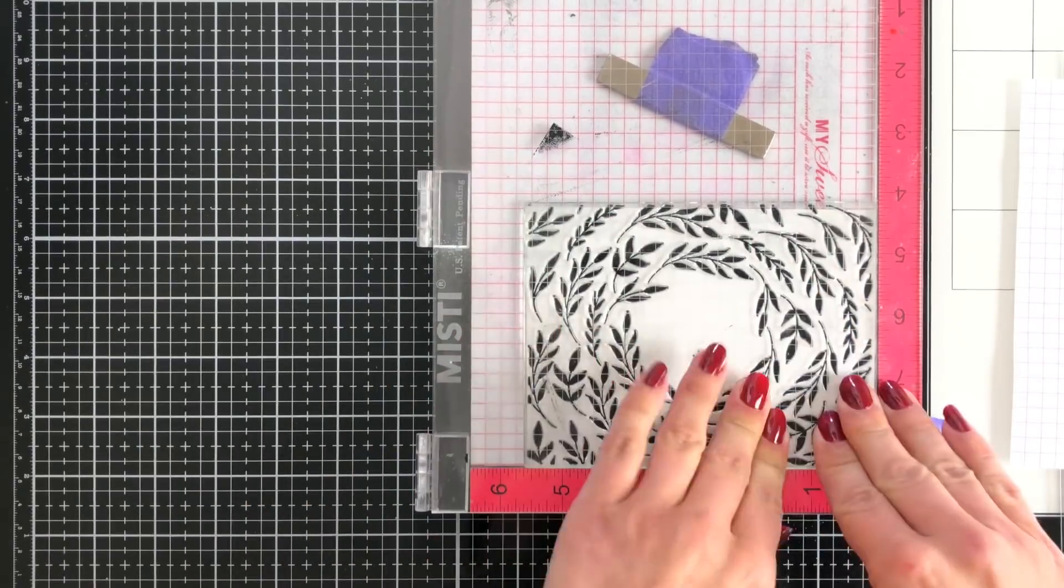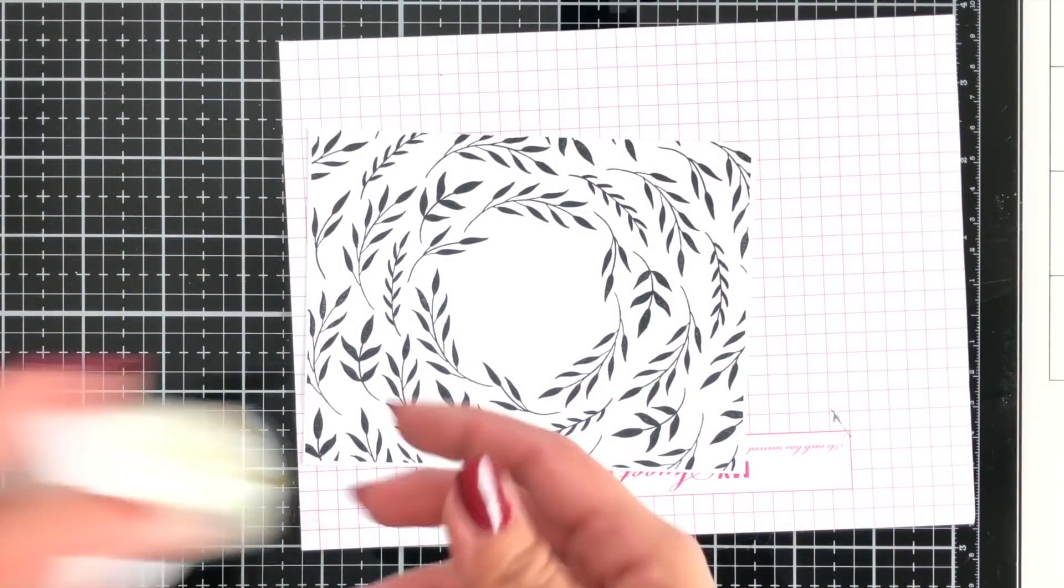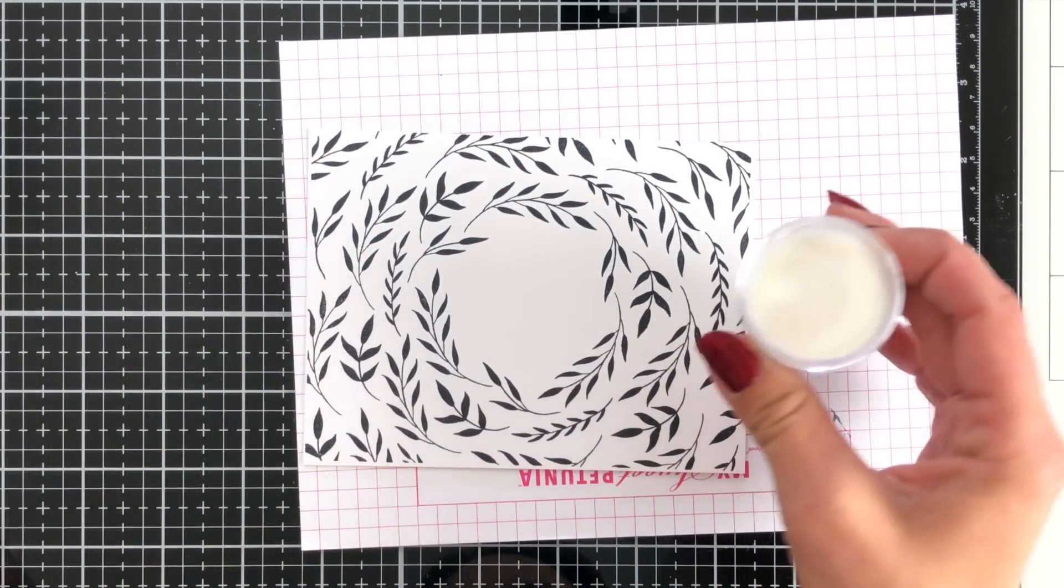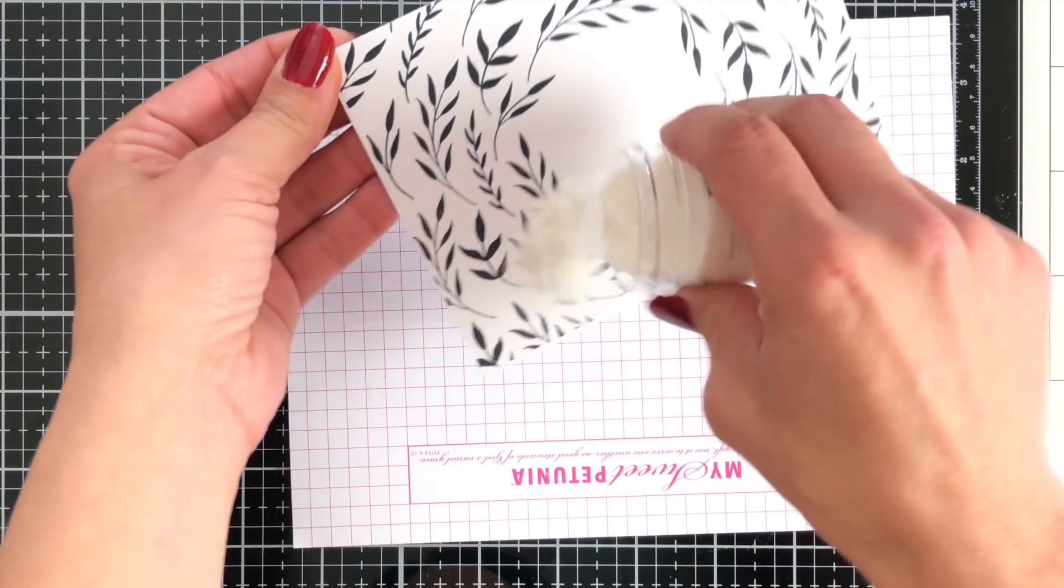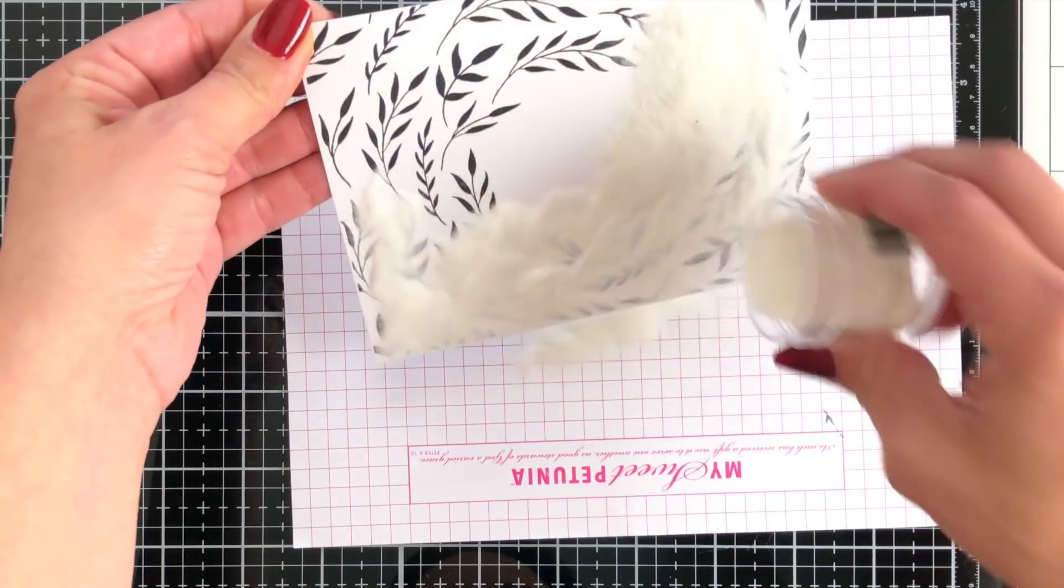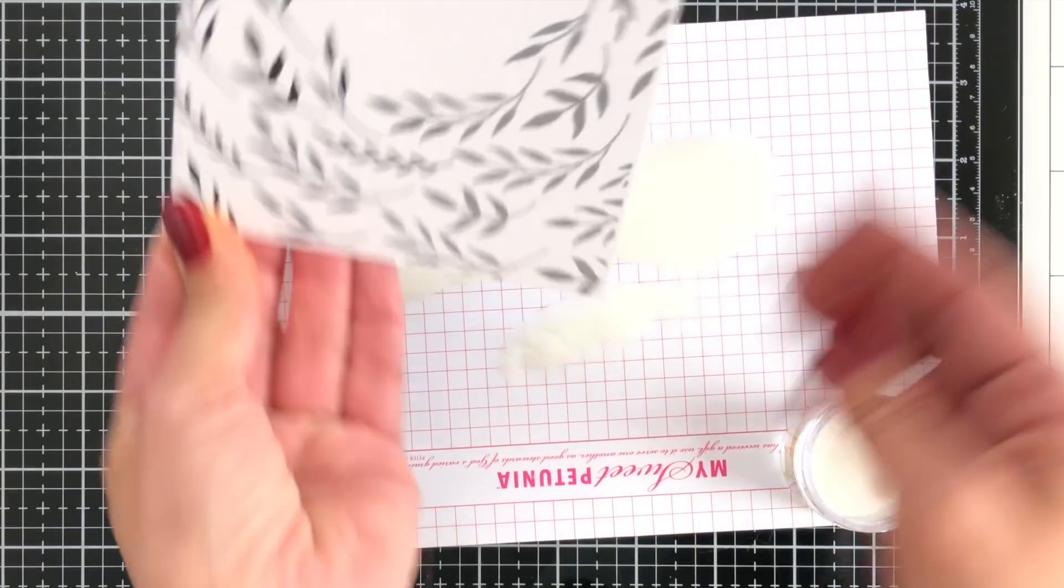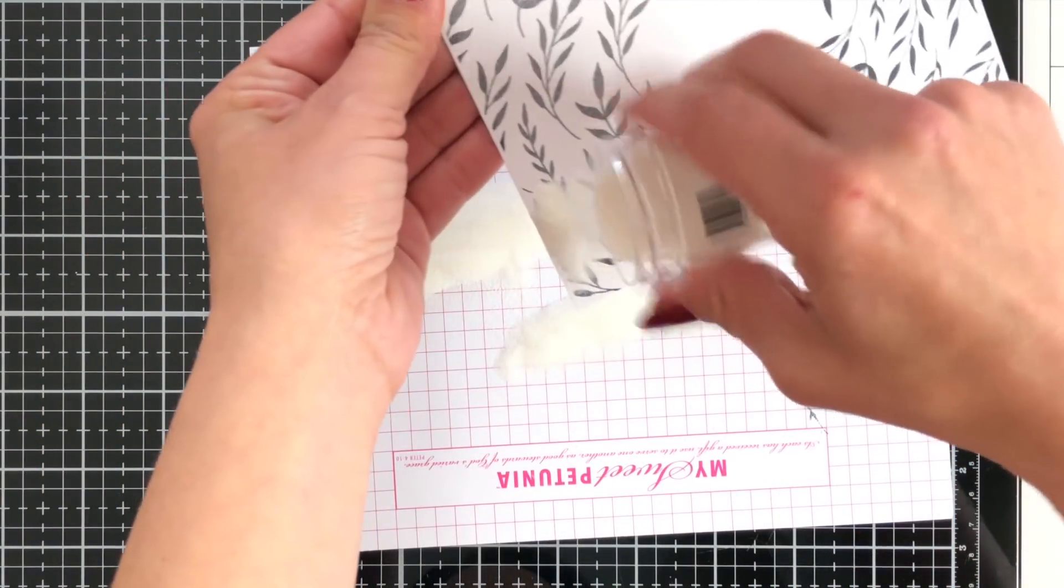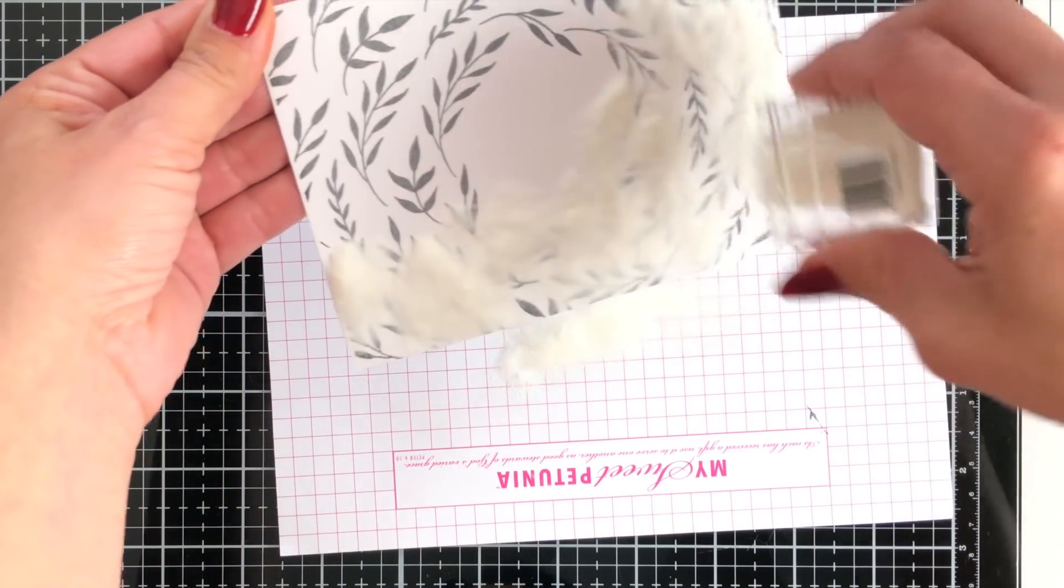I'm going to be using some clear embossing powder. Now you could use black but I think clear is just a really nice way to make that black pop a little bit. So I'm just going to sprinkle this all over my entire background and I have these MISTI pads. They're just sheets of paper that you can buy and they work really great for catching your excess.